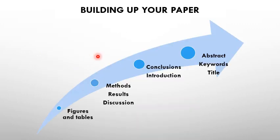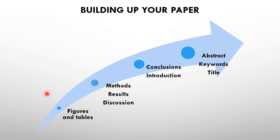Before going through the details of each section, we need to know the logical way to build an article. Let's say you've done all the experimental work, simulation, or whatever you intended to do, and you've decided to publish. The best way to build your paper is: first, prepare all the figures and tables and arrange them in a logical sequence.